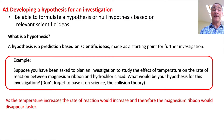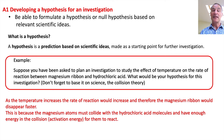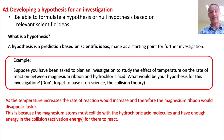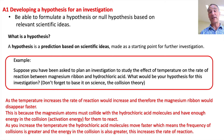I would say: as temperature increases, the rate of reaction would increase and therefore the magnesium ribbon would disappear faster. The science behind this is that magnesium atoms must collide with the hydrochloric acid molecules and have enough energy in the collisions — remember, this is activation energy — for them to react. As you increase the temperature, the acid molecules move faster, which means the frequency of collisions is greater and the energy in the collisions is also greater. This increases the rate of reaction. That's an example of a hypothesis.